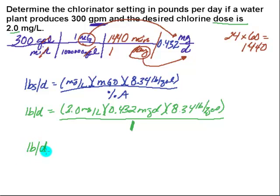So any time they don't give you a percent available or it says chlorine gas, this number is going to be a 1. So everything above the line gets multiplied. So I've got 2 milligrams per liter times my 0.432 times 8.34, and it looks like about 7.2 pounds per day is where the chlorinator setting should be set.